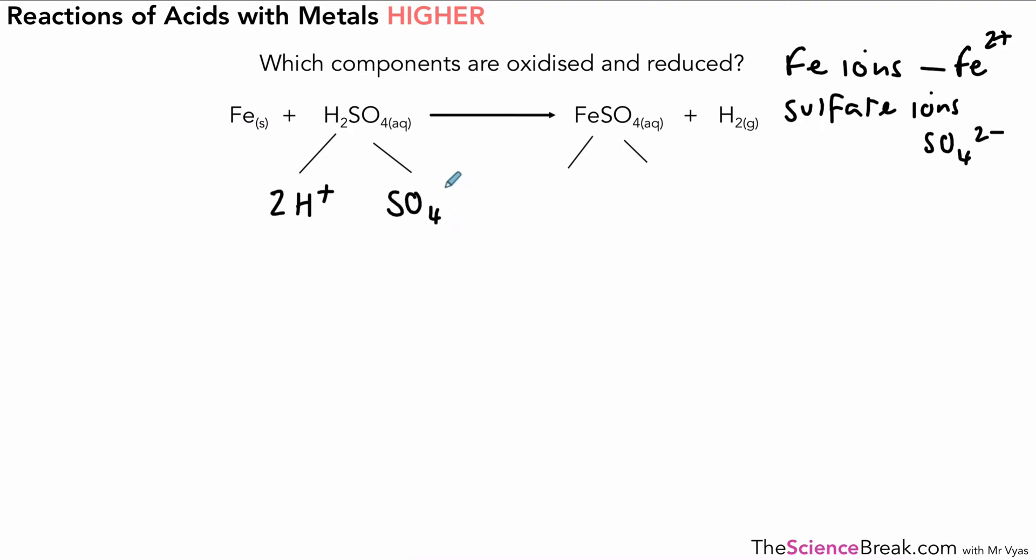And then we're going to have iron ions and sulfate ions in solution—they're going to be separated out from each other. Nothing happens to the sulfate in terms of change from ion to atom or anything like that, but we do have a change with the iron. The iron becomes the metal or goes from the metal to becoming iron ions and two electrons.